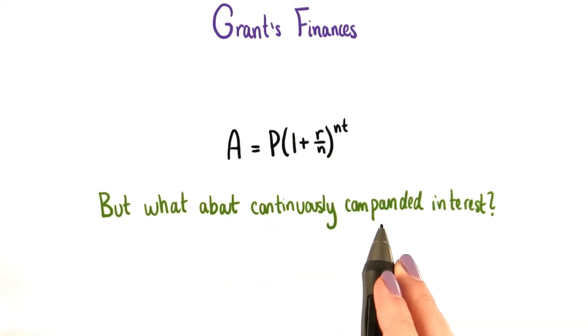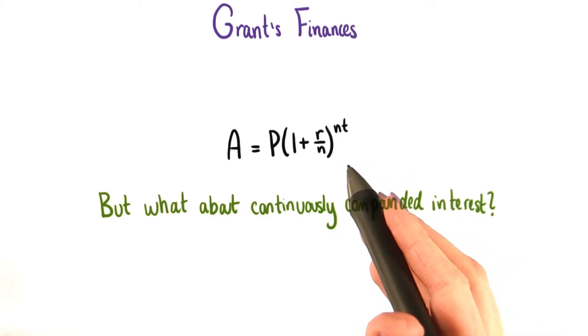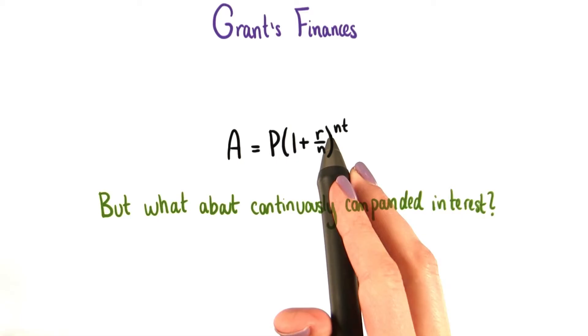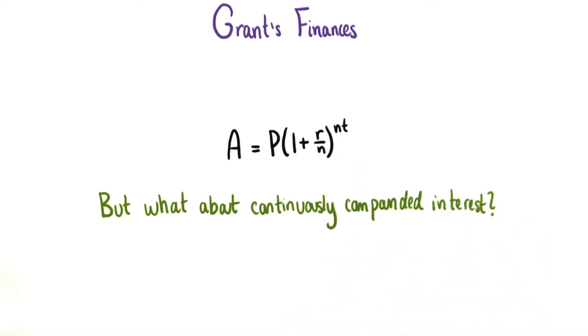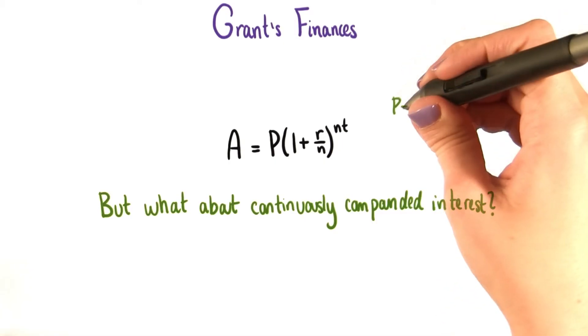As you've experienced, Grant likes to push limits in order to maximize the amount of money he makes. And now he wants to know what would happen if his interest was compounded so frequently that it was actually compounded over and over again all the time.